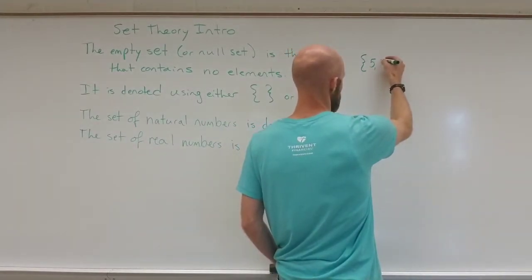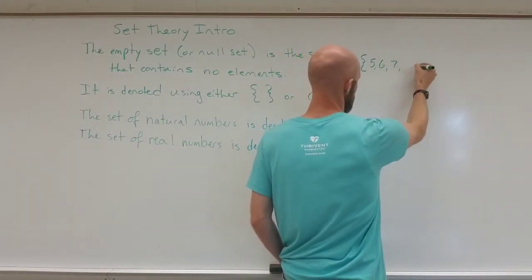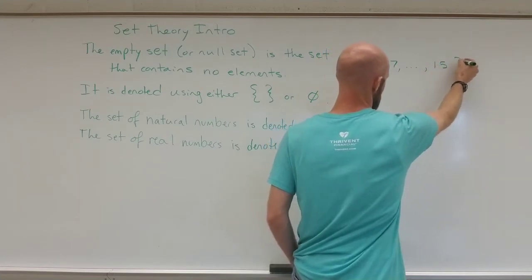So the natural numbers between 5 and 15 including the end points we'll say. That's 5, 6, 7, dot dot dot, up to 15.